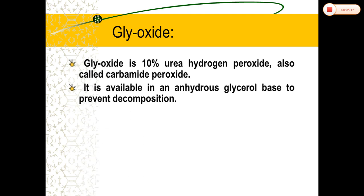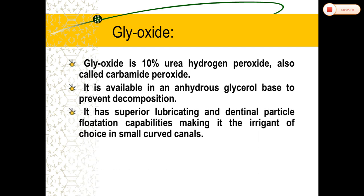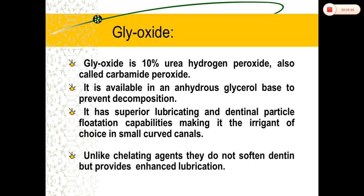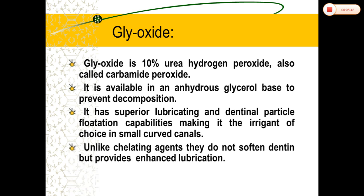Glyoxide: it is 10% urea hydrogen peroxide, also called carbamide peroxide. It is available in an anhydrous glycerol base to prevent decomposition. It has superior lubricating properties and helps in floating out dentinal particles, especially in the case of small, narrow, curved canals. Unlike chelating agents, it will not soften the dentin.